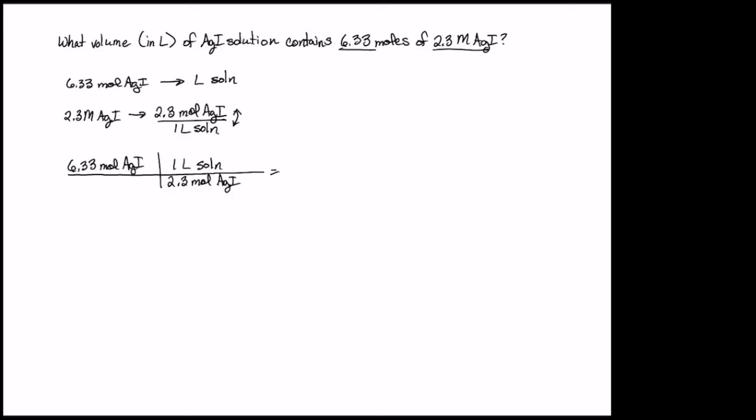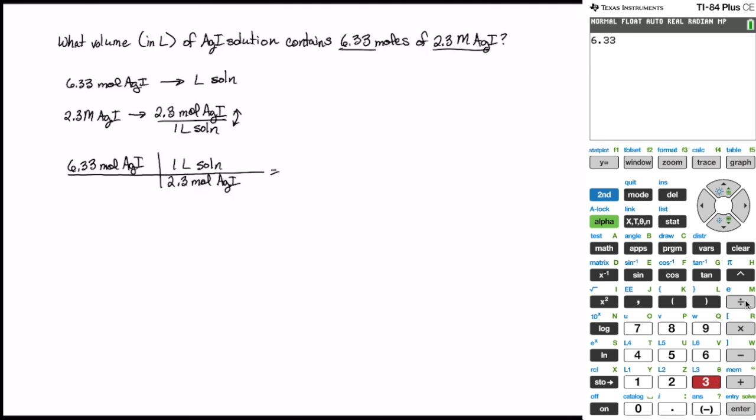So we're dealing with 3 significant digits times the unlimited number of significant digits divided by 2 significant digits. The measurement with the fewest has 2 significant digits and therefore when we record our answer, we'll be recording it to 2 significant digits. 6.33 divided by 2.3 comes out to be 2.7522 liters of solution.